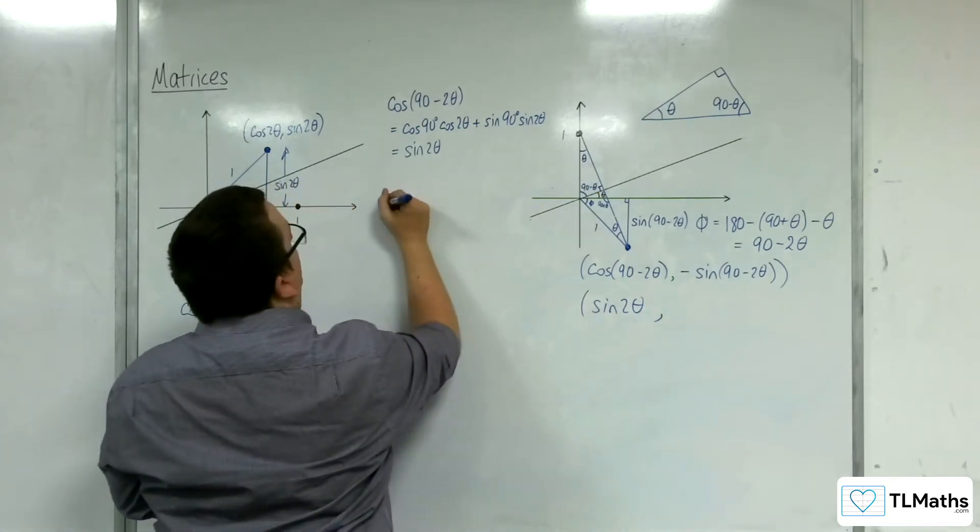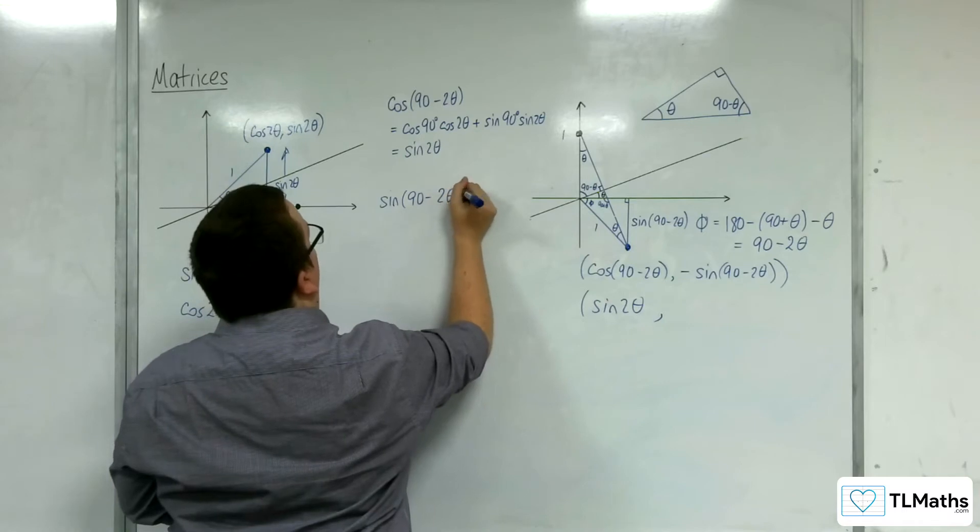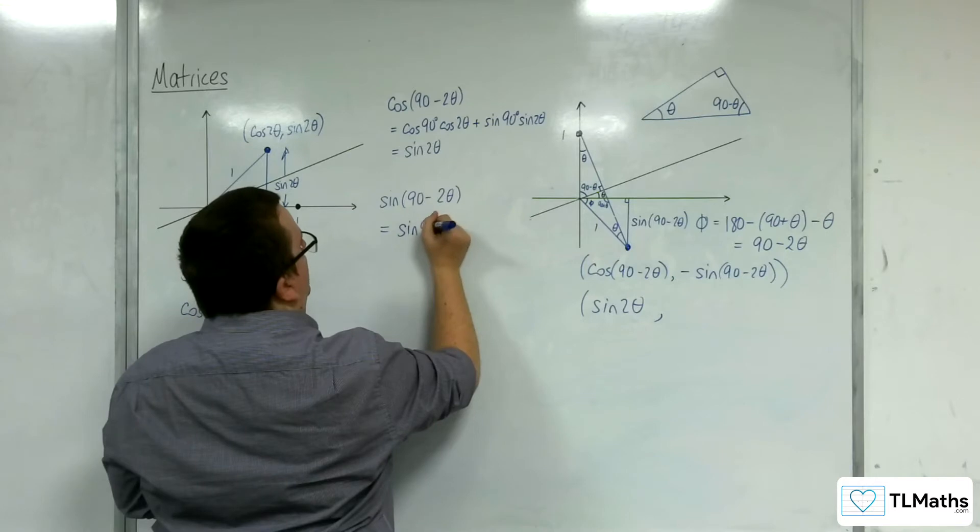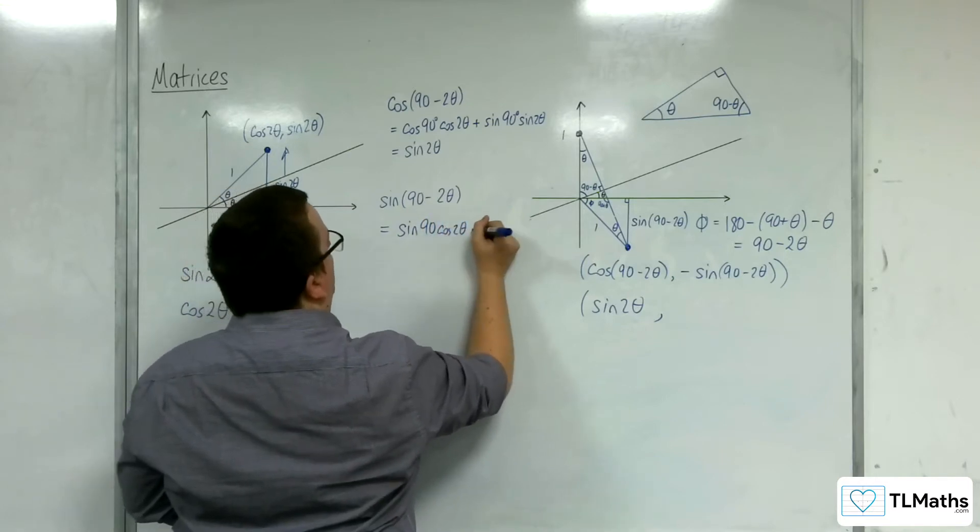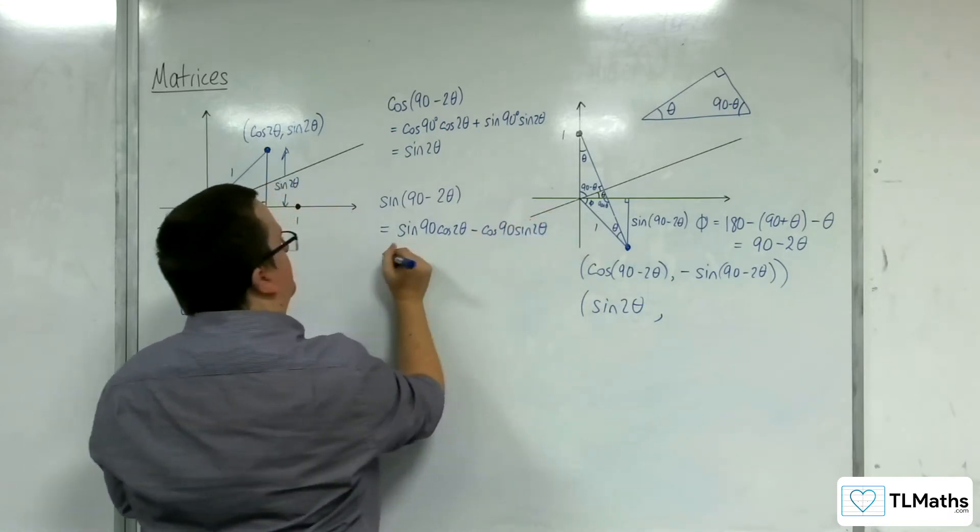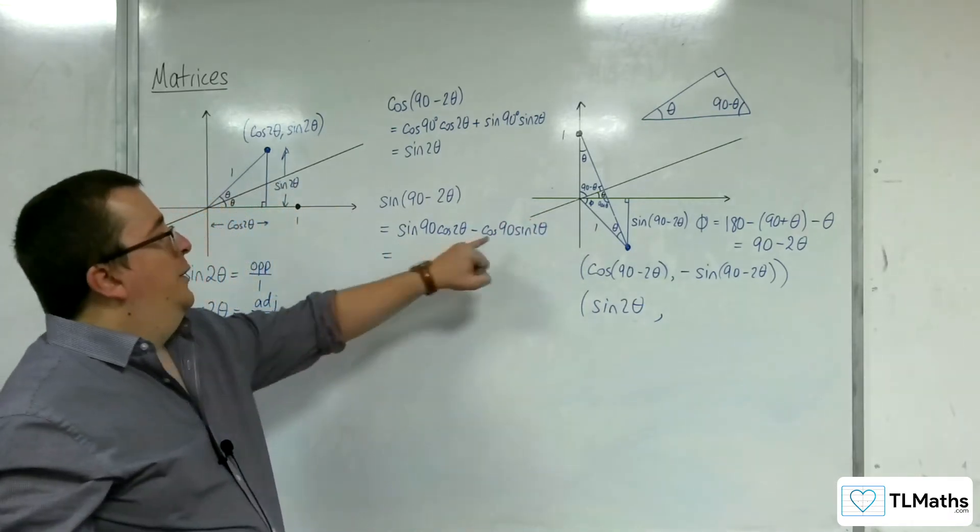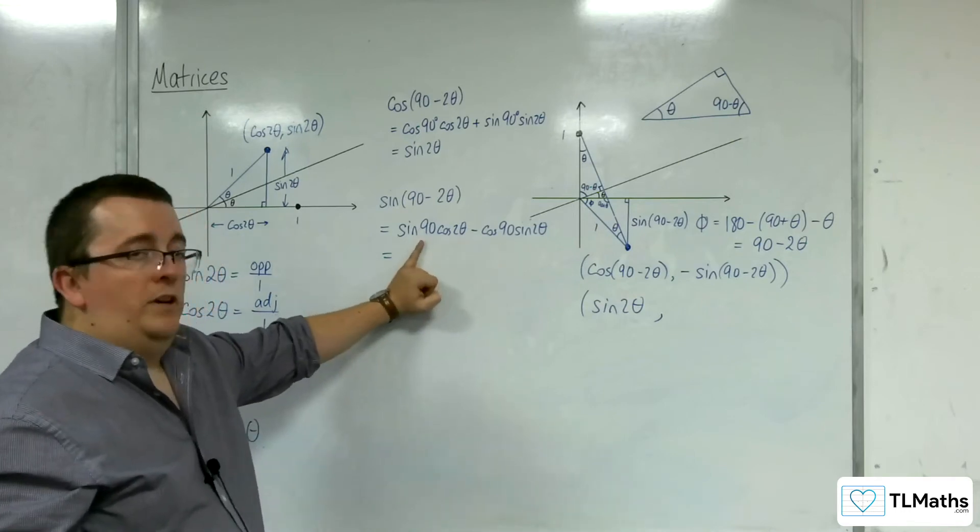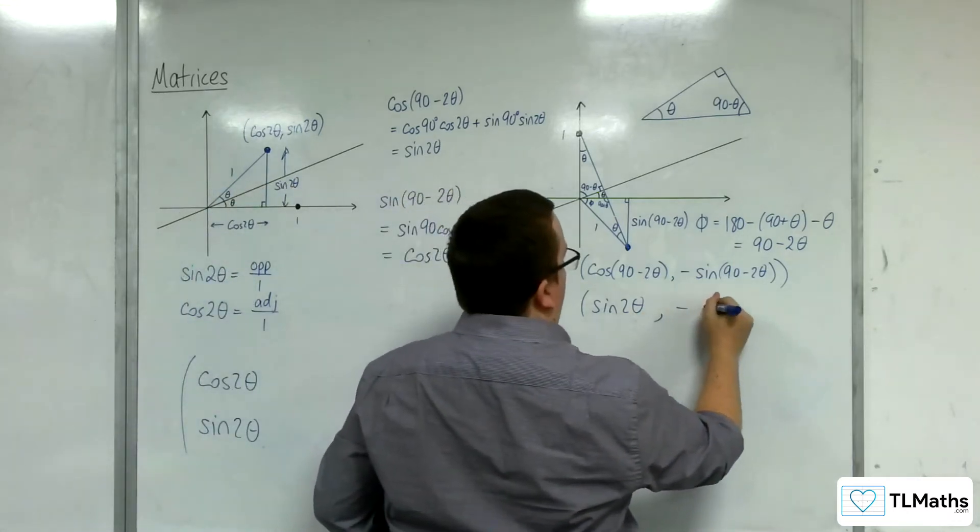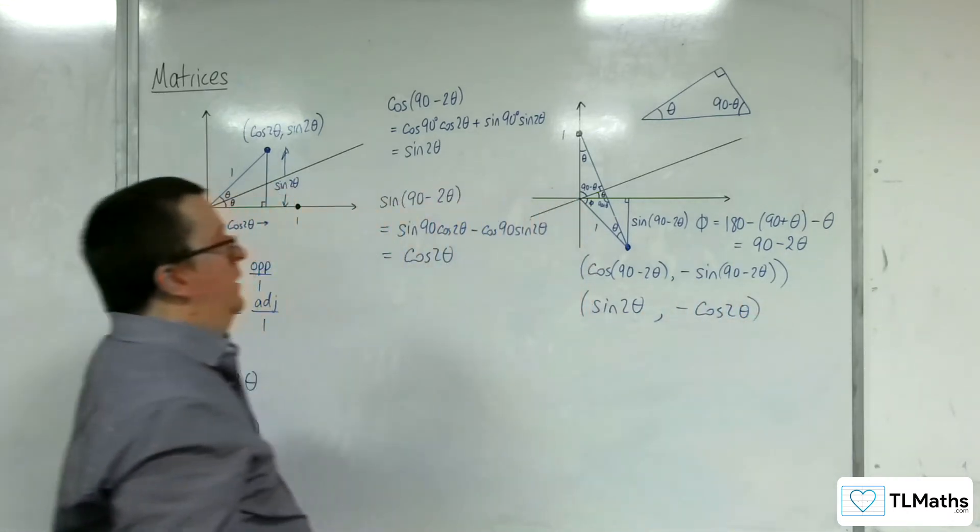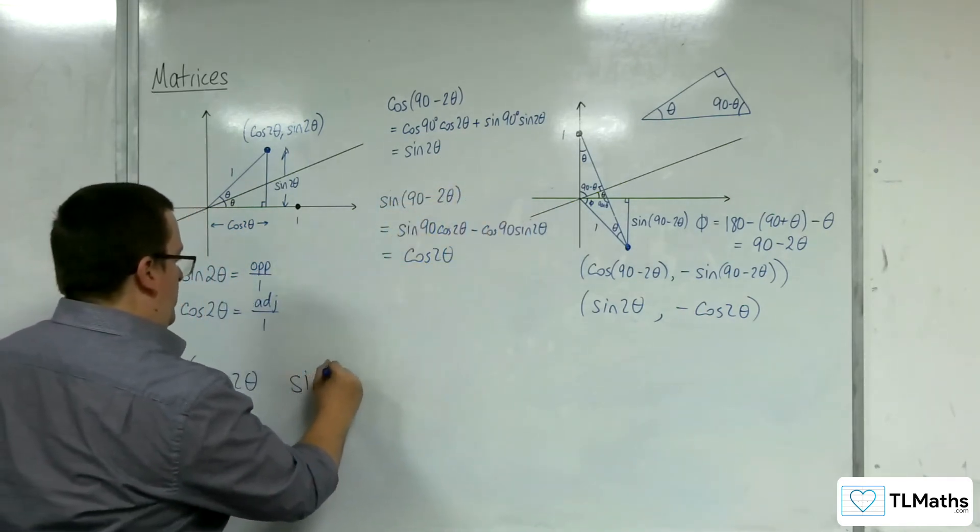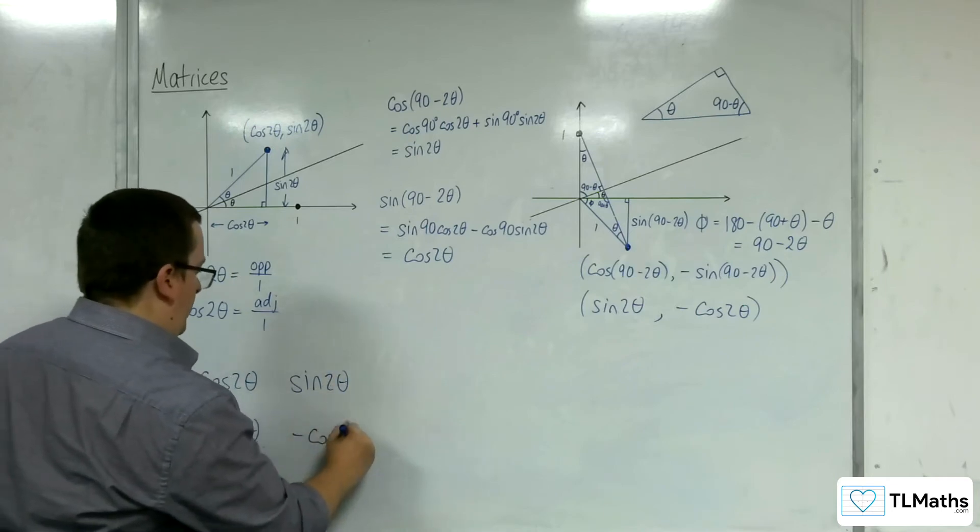If we do the same with the sine of 90 minus 2 theta using the compound angle formula for sine, that is sine 90 cosine 2 theta take away cosine 90 sine 2 theta. Cosine of 90 is 0, sine of 90 is 1, so that's cosine 2 theta. And so this is negative cosine 2 theta. So the point (0,1) has been mapped to (sine 2 theta, negative cosine 2 theta).